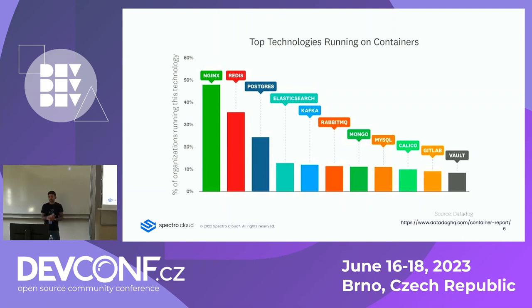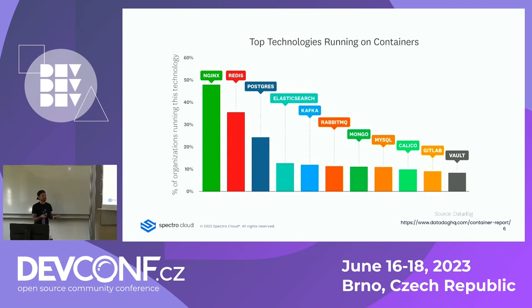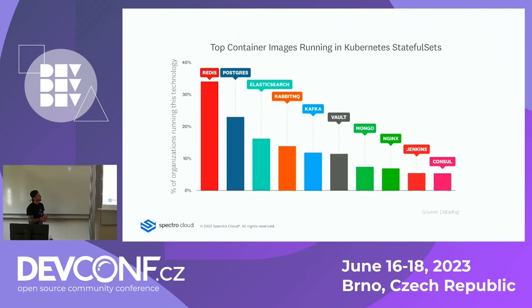Another reason to consider: should I run a database inside Kubernetes? This is from a Datadog report listing the top technologies running on containers, and you can see that Redis, Postgres, Elastic, Kafka, Rabbit, Mongo, MySQL, and Vox are all stateful workloads — they are already running in containers. Even before Kubernetes, those technologies were popular for running in containers. And the top container images running in Kubernetes stateful sets are exactly the same ones.